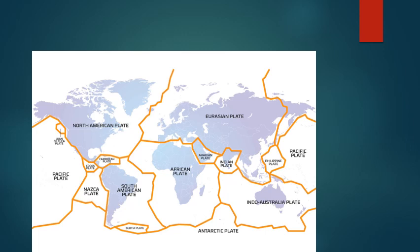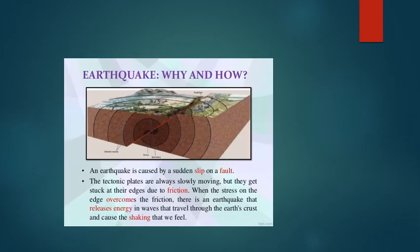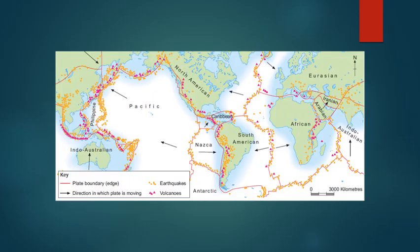The second important cause of earthquakes is plate tectonics. According to the plate tectonics theory, the earth's crust is made up of a series of tectonic plates, and these plates move or slide over each other in response to convection in the upper mantle. As these plates move, they grind with each other and result in earthquakes. The tectonic plates are slowly moving but get stuck at the edges due to friction. When the stress on the edge overcomes the friction, there is an earthquake that releases energy in waves that travel through the earth's crust and cause the shaking that we feel. For example, the Indian plate moves at a rate of 5 cm per year, and earthquake and volcanic zones are roughly the same.